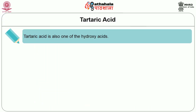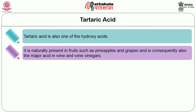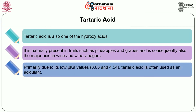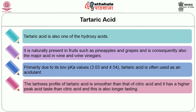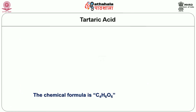Now let us see about tartaric acid. Tartaric acid is also one of the hydroxy acids. It is naturally present in fruits such as pineapples and grapes and is consequently also the major acid in wine and wine vinegars. Primarily due to its low pKa values, tartaric acid is often used as an acidulant. The tartness profile of tartaric acid is smoother than that of citric acid, and it has a higher peak acid taste than citric acid. Tartaric acid is also the most expensive among the acids commonly used in food. The chemical formula is C4H6O6.